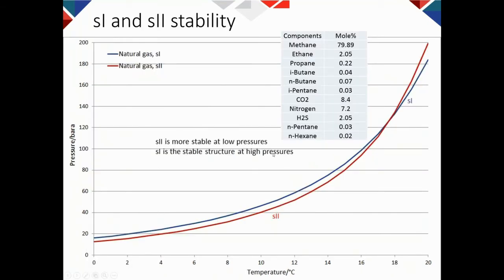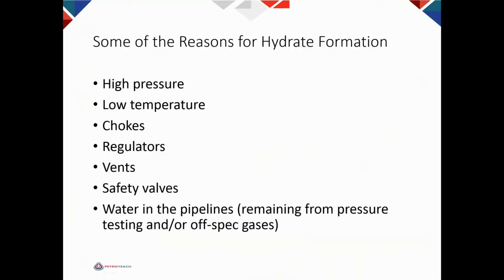Here is another system from the Middle East. In this composition, Structure I and Structure II boundaries are very close to each other. At low pressure, Structure II is stable, and at high pressure Structure I is stable — it becomes stable first because it can form before the other structure. Conditions that lead to hydrate blockage include high pressure and low temperature: chokes, regulators, safety valves, water remaining in pipelines from pressure testing, or off-spec gases can all result in hydrate formation.